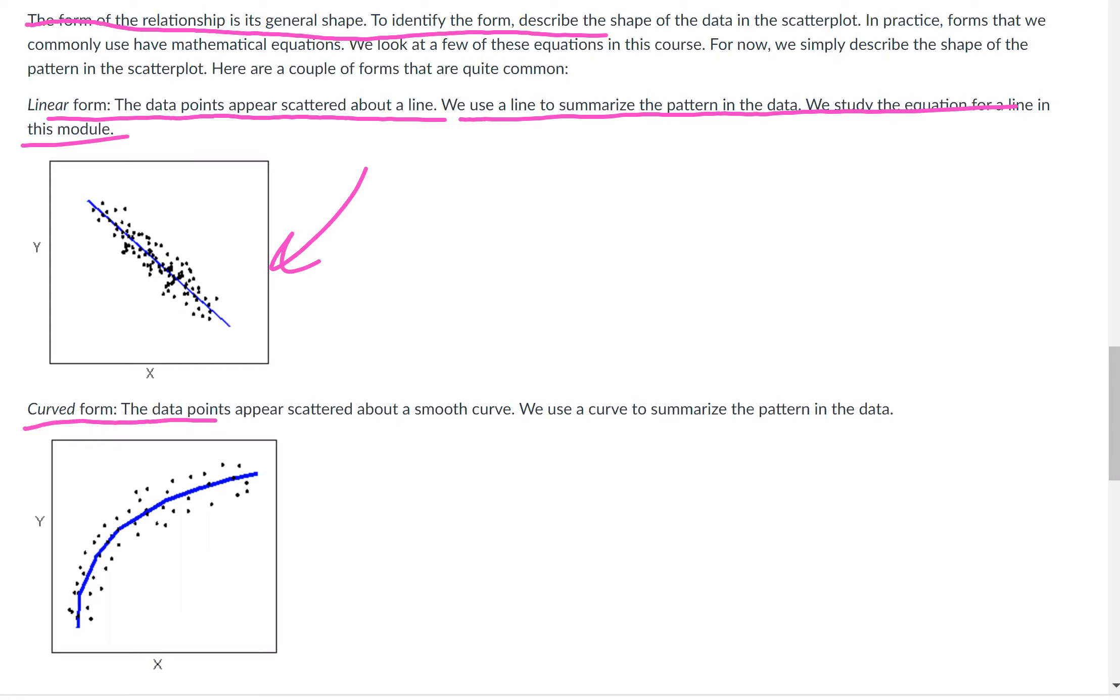It can also have a curved form. The data points appear scattered about a smooth curve. We use a curve to summarize the patterns in the data. So this one, if you ignore the blue curve, just imagine those dots. They don't look like they're quite a line. They look like they're kind of curving as they go up. They're kind of not sloping as drastically as they were. So it looks more like a curve than a line. Some are more obvious than others that they're a curve rather than a line.